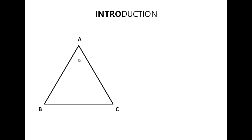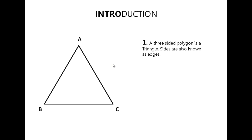The first point I'd like to discuss is that a triangle is a three-sided polygon. A polygon is a two-dimensional figure that has a finite number of line segments and has a closed path. For example, an octagon, a pentagon, a rectangle, a hexagon — all of these are polygons, and of course, a triangle is also a polygon.